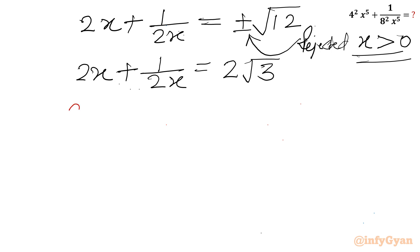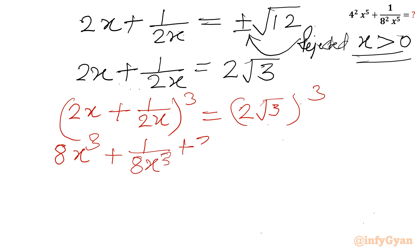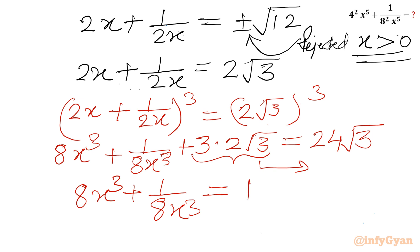Now I will consider cubing both sides. So (2x + 1/2x)³ — applying (A + B)³ — gives 8x³ + 1 over 8x³ + 3AB times (A + B). The 3AB term gives 3 times (A + B) which is 3 times 2√3 = 6√3, and the RHS is (2√3)³ = 24√3. Taking 6√3 to the RHS: 8x³ + 1 over 8x³ equal to 24√3 minus 6√3 = 18√3. Let us call this equation number 1.